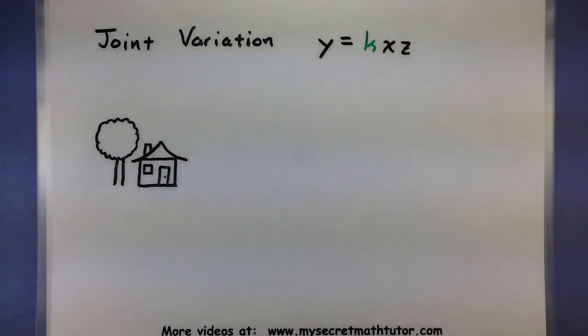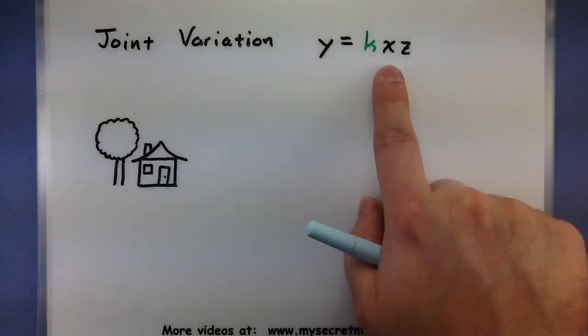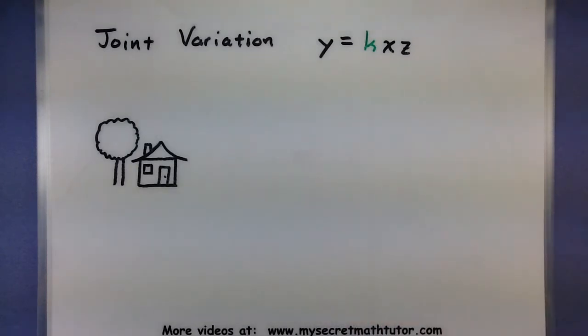A good example that maybe you could think of how a joint variation problem would need three variables might go into, say, the cost of the house. So let's say y is the cost of our house. And our variables x and z, one will represent the entire square footage of the house, and z will represent the number of rooms.